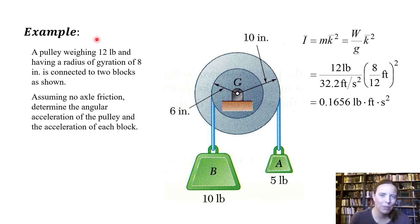Okay, let's do just one more example here, and this one we will have an object that is going through rotational motion. So what we have is a pulley weighing 12 pounds, having a radius of gyration of 8 inches, connected to two blocks as shown. Assuming no axle friction, determine the angular acceleration in radians per second squared of how fast this pulley is rotating and the acceleration of each block.